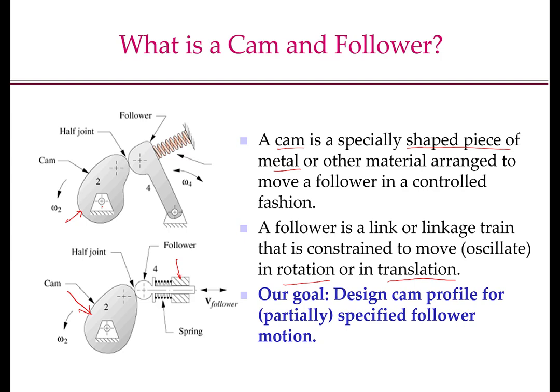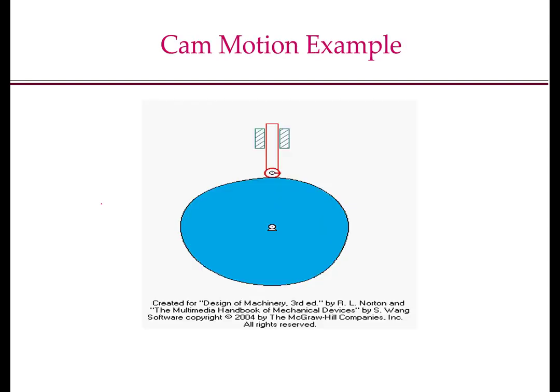It is assumed the cam is on a rotating shaft, which we call the cam shaft, which is moving at a constant angular speed. Let us first look at a couple of examples of a cam follower system. In this picture, this is a cam that is being rotated by a cam shaft, and this is a translating follower.